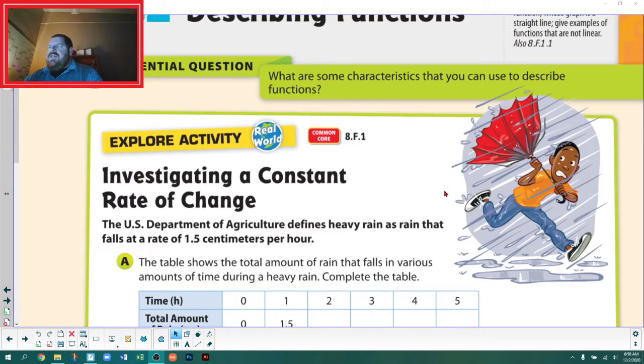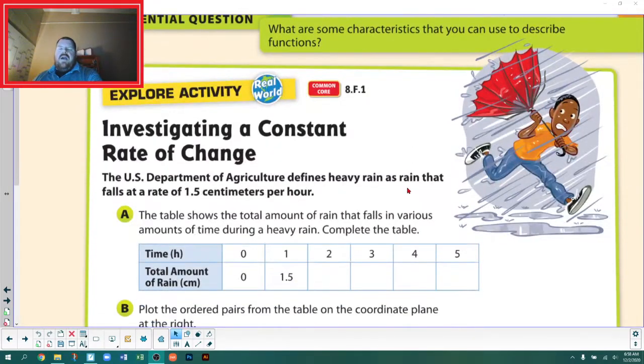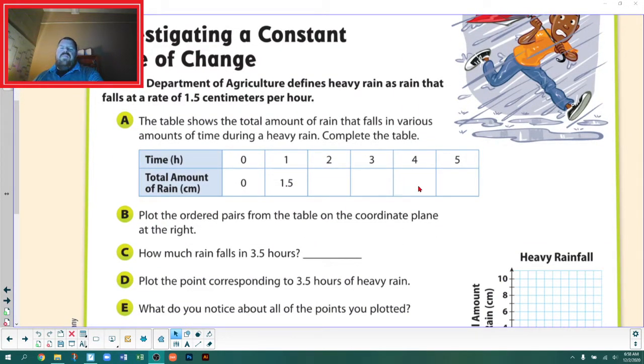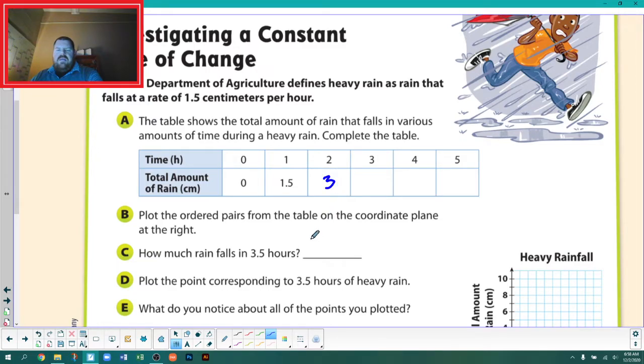First we're going to investigate a constant rate of change. The U.S. Department of Agriculture defines heavy rain as rain that falls at a rate of 1.5 centimeters per hour. Like filling up a little controlled cylinder, 1.5 centimeters every hour. We know we're starting at zero rain and going up 1.5 centimeters every hour. At two hours we have three centimeters, at three hours 4.5 centimeters, at four hours six centimeters, and at five hours 7.5 centimeters. Every time increasing by a centimeter and a half.